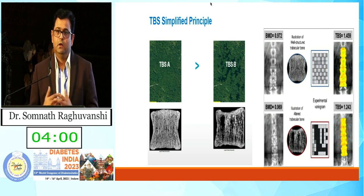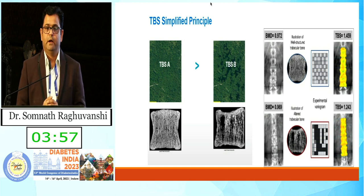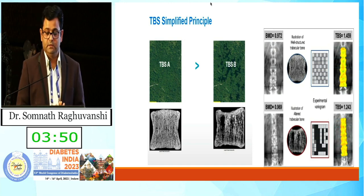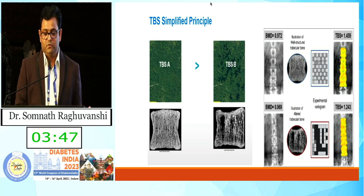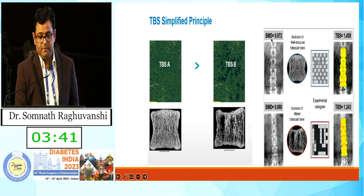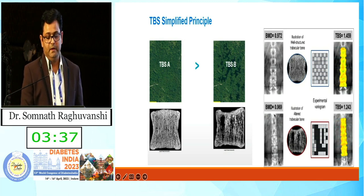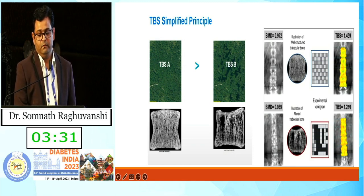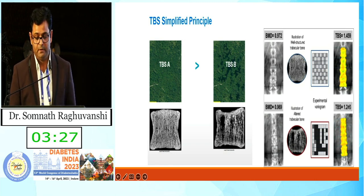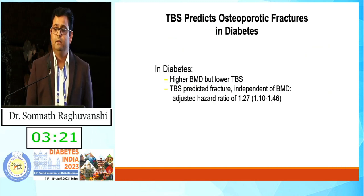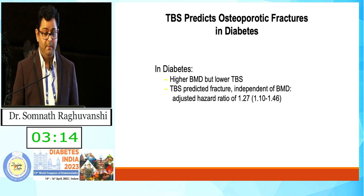For trabecular morphology, we should calculate the Trabecular Bone Score (TBS). TBS is calculated by superimposing a pixel analysis on the conventional DEXA BMD pictures. We can see that a type 2 diabetes patient having higher BMD shows a TBS score of 1.2 compared to 1.4 in controls. So TBS score is lower in patients with type 2 diabetes compared to controls. In diabetes: higher BMD but lower TBS — basically, bone strength is lower. TBS predicts fracture risk in type 2 diabetes independently of BMD, with a hazard ratio of approximately 1.27.